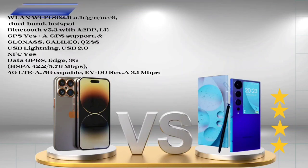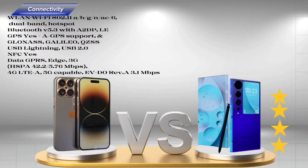iPhone 15 Ultra connectivity: Wi-Fi 802.11 a/b/g/n/ac/6, dual-band, hotspot. Bluetooth v5.3 with A2DP. GPS with A-GPS support, GLONASS, Galileo, QZSS. USB: Lightning, USB 2.0. NFC. Data: GPRS, Edge, 3G HSPA 42.2/5.76 Mbps, 4G LTE, 5G capable, EV-DO Rev. A 3.1 Mbps.